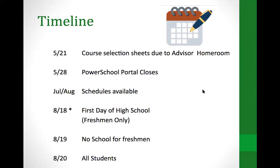Just a few ideas of the timeline — hopefully this was shared with you on Canvas. The course selection sheets were given to every student and are also accessible on the student Canvas page. Those sheets should be turned into the student's advisor — their homeroom teacher — by May 21st. There is a PowerSchool portal where students enter their course requests; it is open and will close on May 28th. During July and August we will be working on the master schedule, and student schedules will be available and placed in the mail.